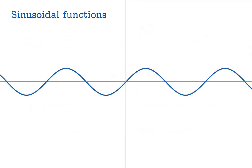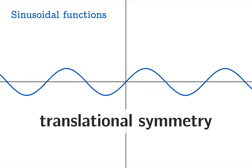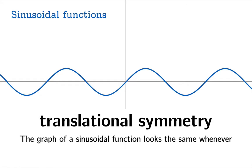Sinusoidal functions have many different symmetries. For example, it has translational symmetry. The graph of a sinusoidal function looks the same whenever it is shifted integral multiples of its period. So you can shift it left and right, and as long as you're matching up the periods, you get the same graph back. That's what we mean by a symmetry. It's something you can do to the graph and not have the appearance of it change.